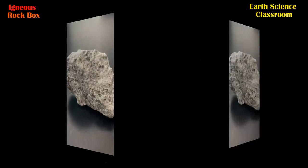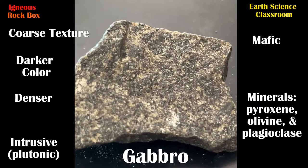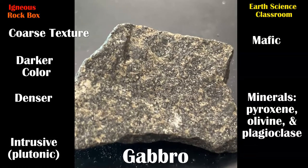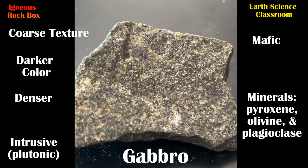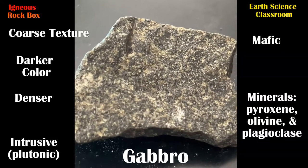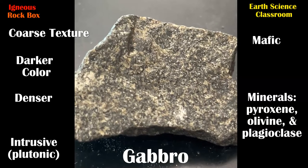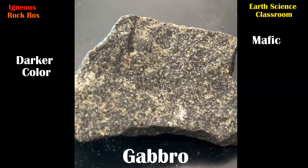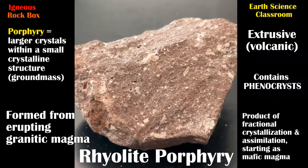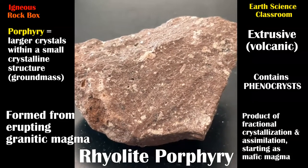Next is gabbro, our first mafic, denser igneous rock. It's still intrusive, it's coarse, and has a mixture of minerals like pyroxene, olivine, and plagioclase. This is our first sample of an extrusive igneous rock, formed from cooling lava much more quickly, which gives it a certain texture and characteristics.